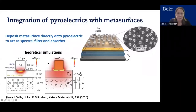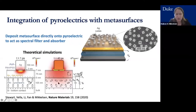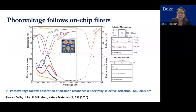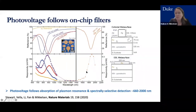COMSOL simulations show light hitting the structure generating a temperature change first in the gap region, which then diffuses into the underlying layers — gold and then the aluminum nitride pyroelectric. This modifies the polarization, giving rise to a pyroelectric voltage that depends on the resistance, detector area, pyroelectric coefficient of the material, and the temperature change. We then verified that this photovoltage follows the metasurface spectral filters — confirming that the metasurface provides spectrally selective detection.